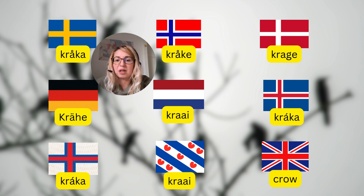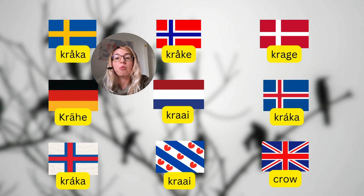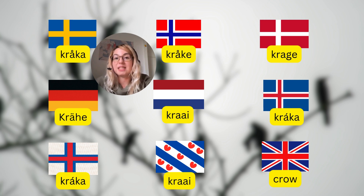Fun fact: 'kráka' in Old Norse is also the nickname of Queen Aslaug, one of Ragnar Lothbrok's wives. It was her nickname until Ragnar Lothbrok found out that she was actually the daughter of the famous hero Sigurd, the dragon slayer.